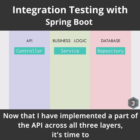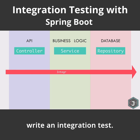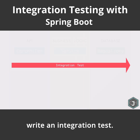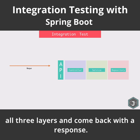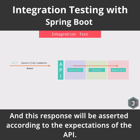Now that I have implemented a part of the API across all three layers, it's time to write an integration test. For the integration test, I want to send a GET request to the API and it should go through all three layers and come back with a response. And this response will be asserted according to the expectations of the API.